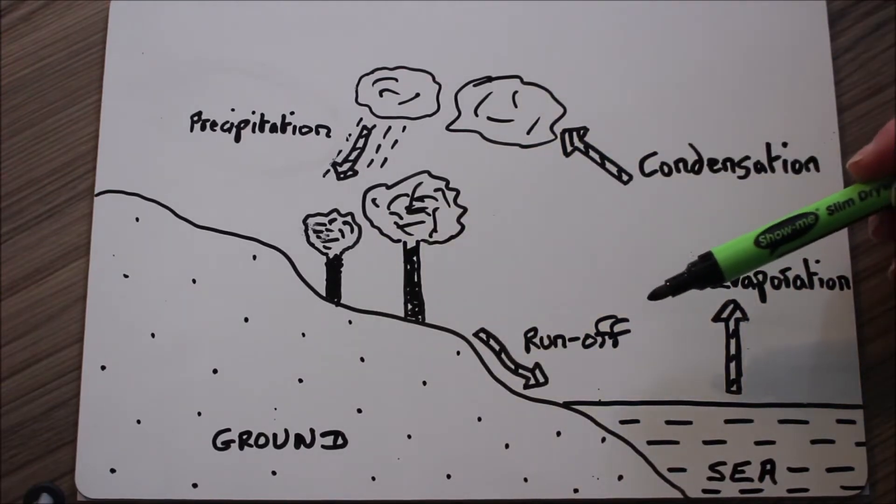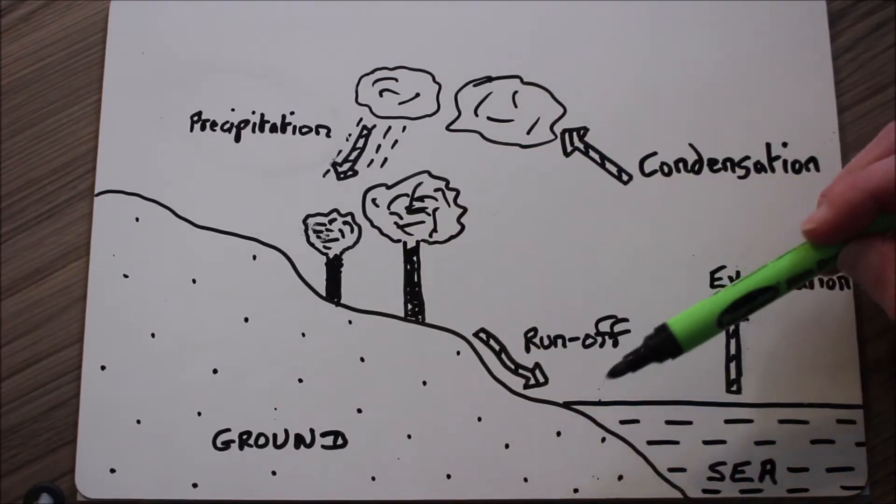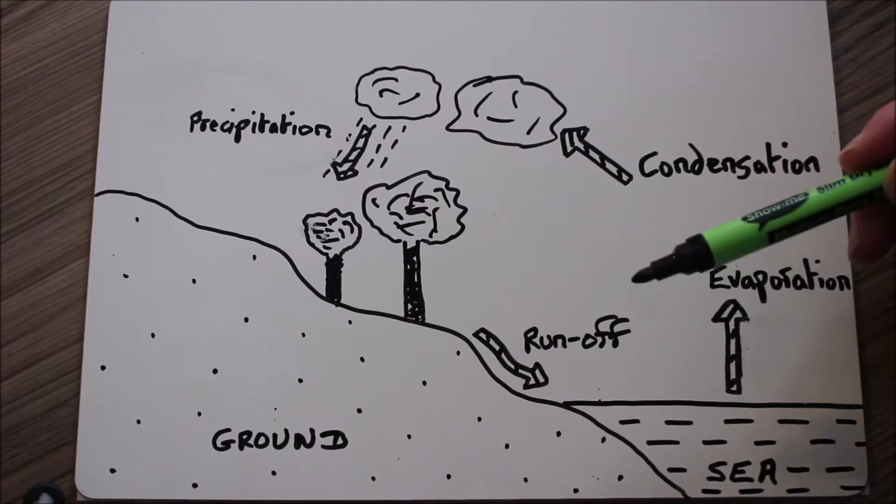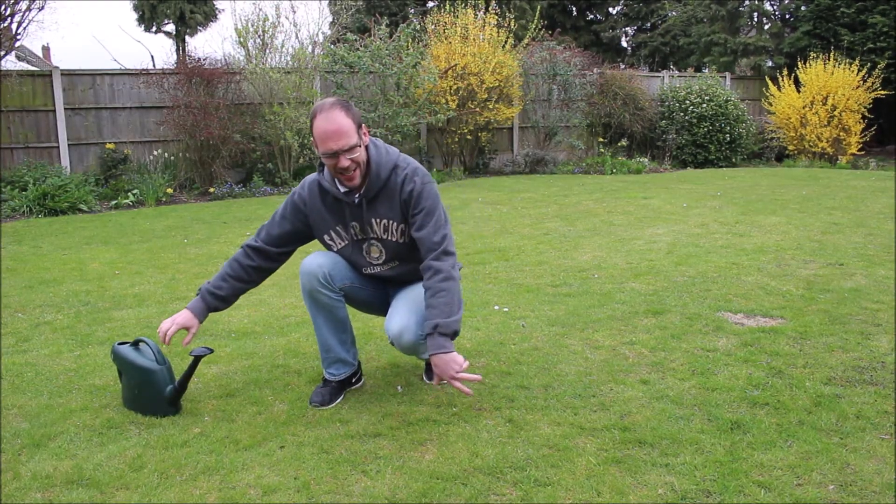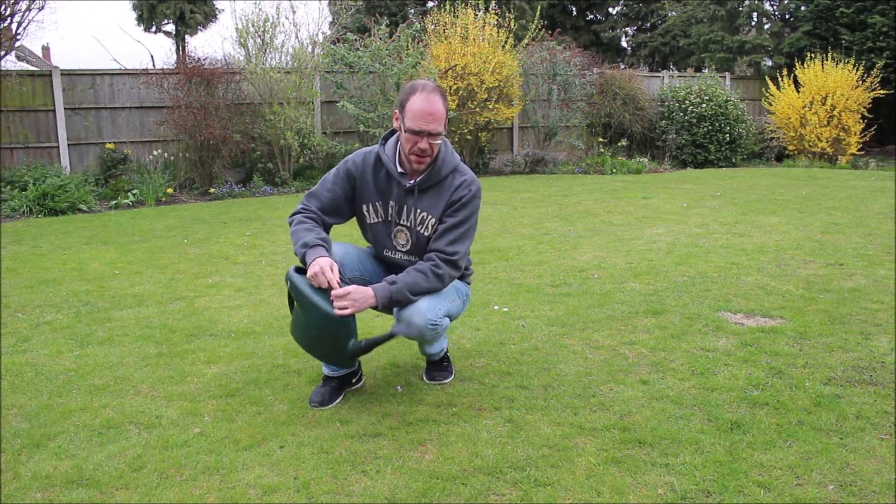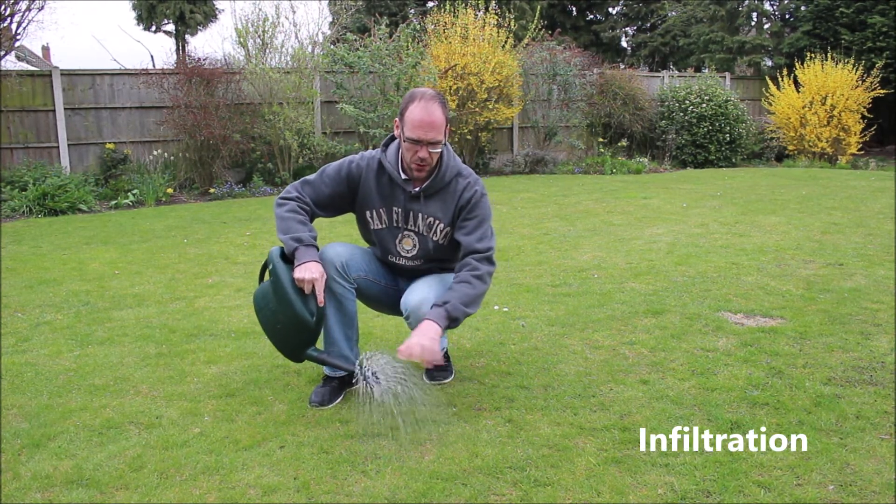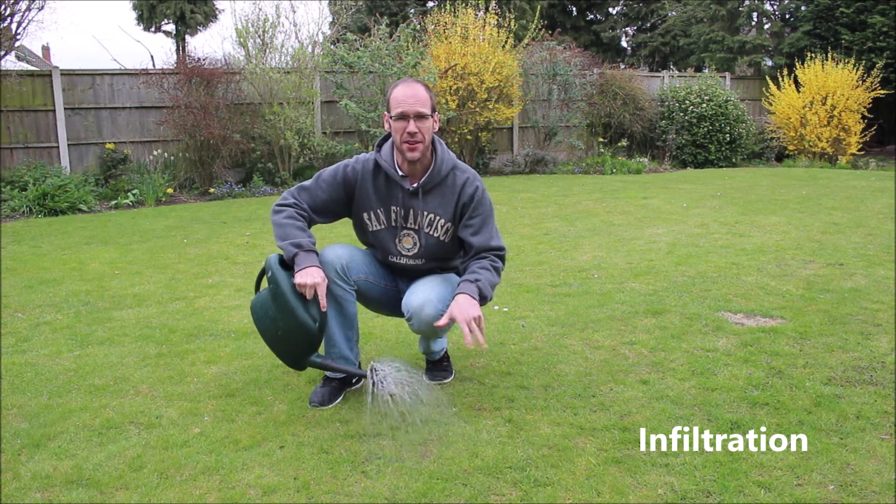And our fourth main process is runoff. This is where water goes over the ground as rivers or streams or trickles and not into the ground. When water falls out of the sky, it might land on the soil or on other permeable surfaces. Permeable means that the water soaks down into the ground.